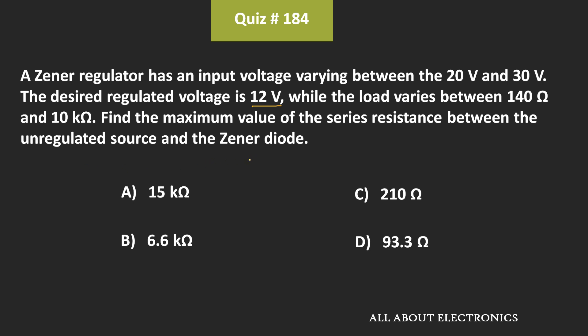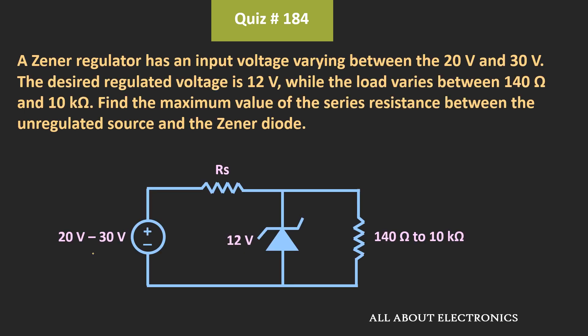First, let us draw the circuit based on the given values. The input voltage varies between 20 to 30V, while the load resistance varies from 140 ohm to 10 kilo ohm. The Zener voltage is equal to 12V, and we have been asked to find the value of this series resistor.